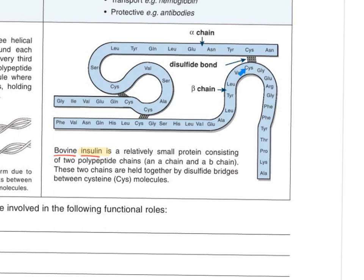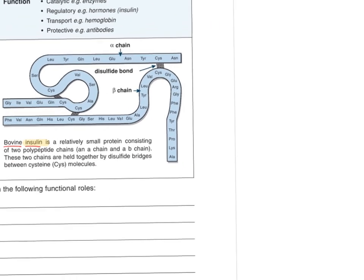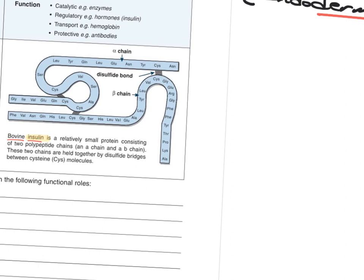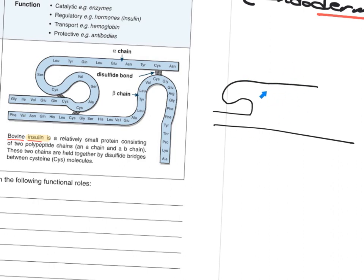Insulin is like a key that opens a door in cells and lets sugar in; otherwise your blood glucose can't get into your cells. If you didn't have cysteine in the right place, it couldn't form the disulfide bond, and instead of the correct folded shape, you'd have something straight — that wouldn't work. You've messed up the key; it won't open the doors. People who are type 1 diabetics may have a gene that produces a protein without the right tertiary structure, so it will not work.